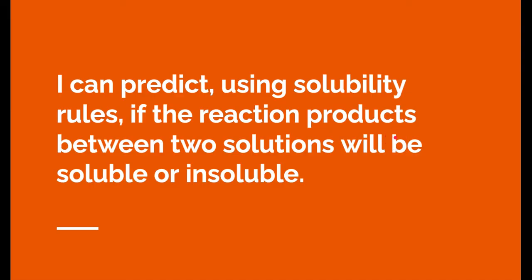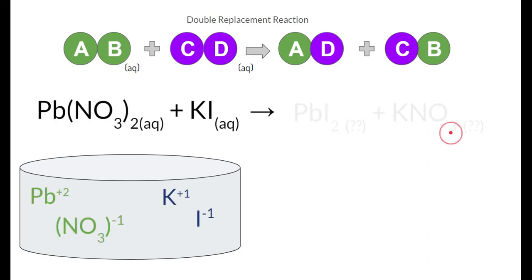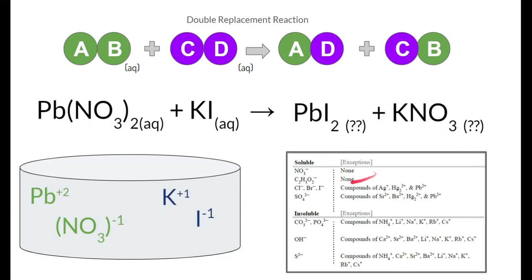And that leads us to the last learning target. It says, I can predict, using solubility rules, if the reaction products between two solutions will be soluble or insoluble. Sometimes when we mix these substances, they create these things called insoluble precipitates. So I got to go to this right here. This is the same substance we just saw before. This solubility rules right here is what I'm talking about. This is found on the back of your periodic table. It will also be found on the test tomorrow. But in order to use it, we're going to take a look at these rules right here.